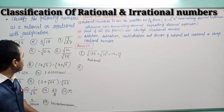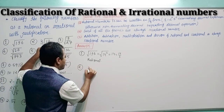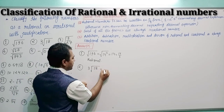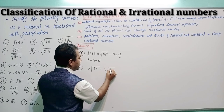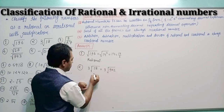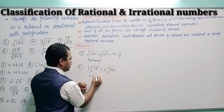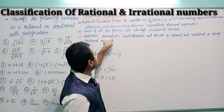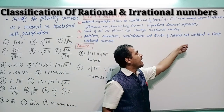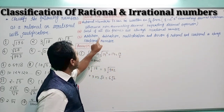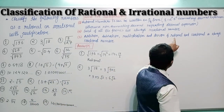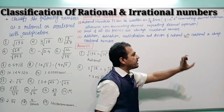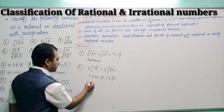Second question: 3√18. Here 3√18 can be written as 3√(9×2), which gives 3×3×√2 = 6√2. As per the third point, addition, subtraction, multiplication, and division of a rational number with an irrational number is always irrational. So 6 (rational) multiplied by √2 (irrational) gives an irrational result. Therefore this is irrational.